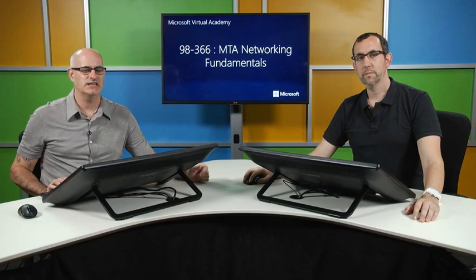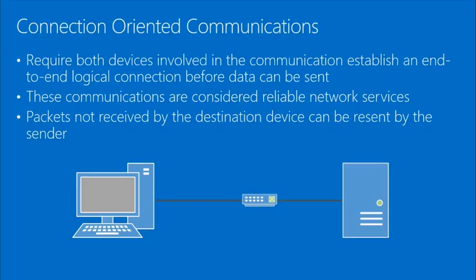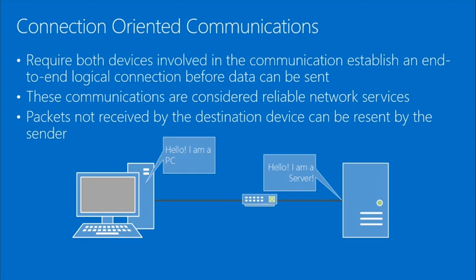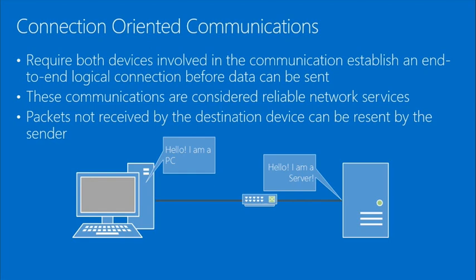This layer contains both connection-oriented and connectionless connections. Connection-oriented communication requires both devices to establish an end-to-end connection. In the animated example, the PC says it needs services, the server acknowledges, the PC says it wants to send something important, and the server confirms it will watch for it. This back-and-forth ensures communication happens correctly, in order, and on time. Packets not received can be resent.